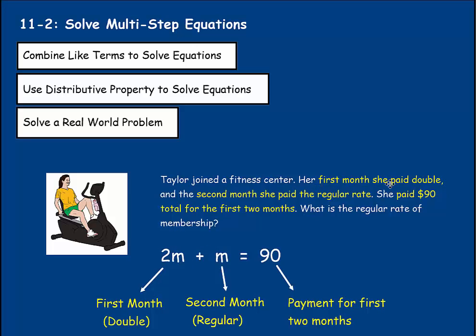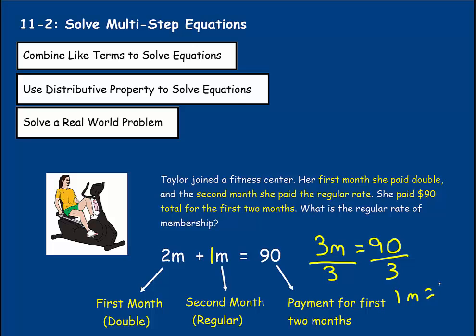For the first month she paid double, meaning that whatever the monthly rate is, she paid twice that — so 2 times M. The second month she paid the regular rate, so we add just a regular monthly rate. That would equal $90. We'd have to simplify first — we have 2M plus 1M, so 2 plus 1 would be 3M. The three months' rate equals $90. To find one month, we divide both sides by 3, so one month would equal $30.